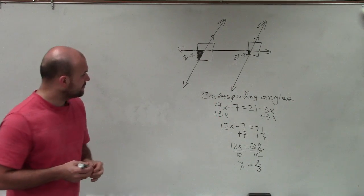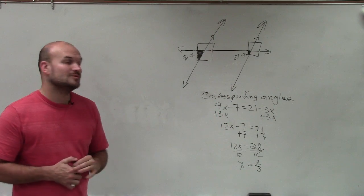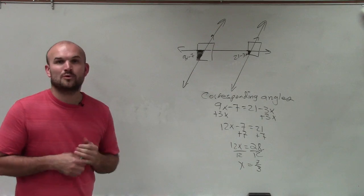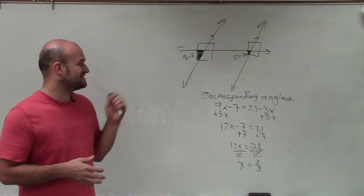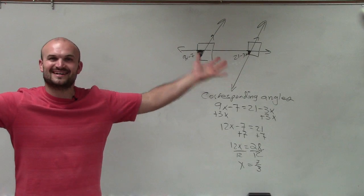So that would be your final answer for your measure of x that's going to make those two angles equal to each other because you have corresponding angles with parallel lines and a transversal. There you go, keep on learning. Bye.